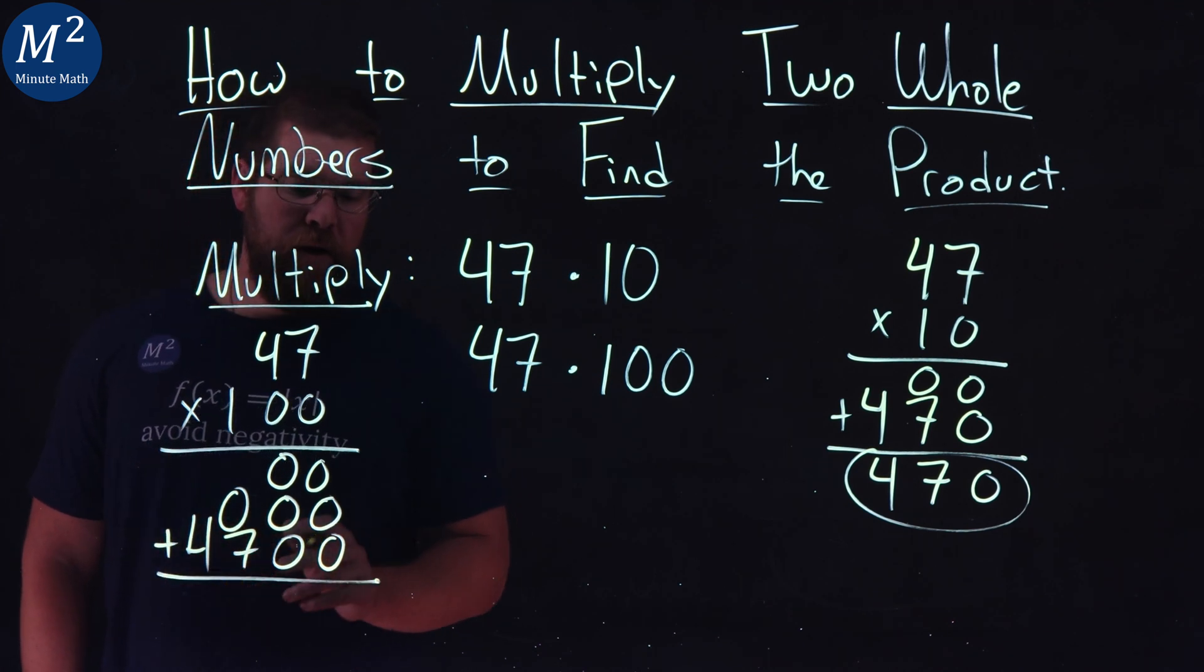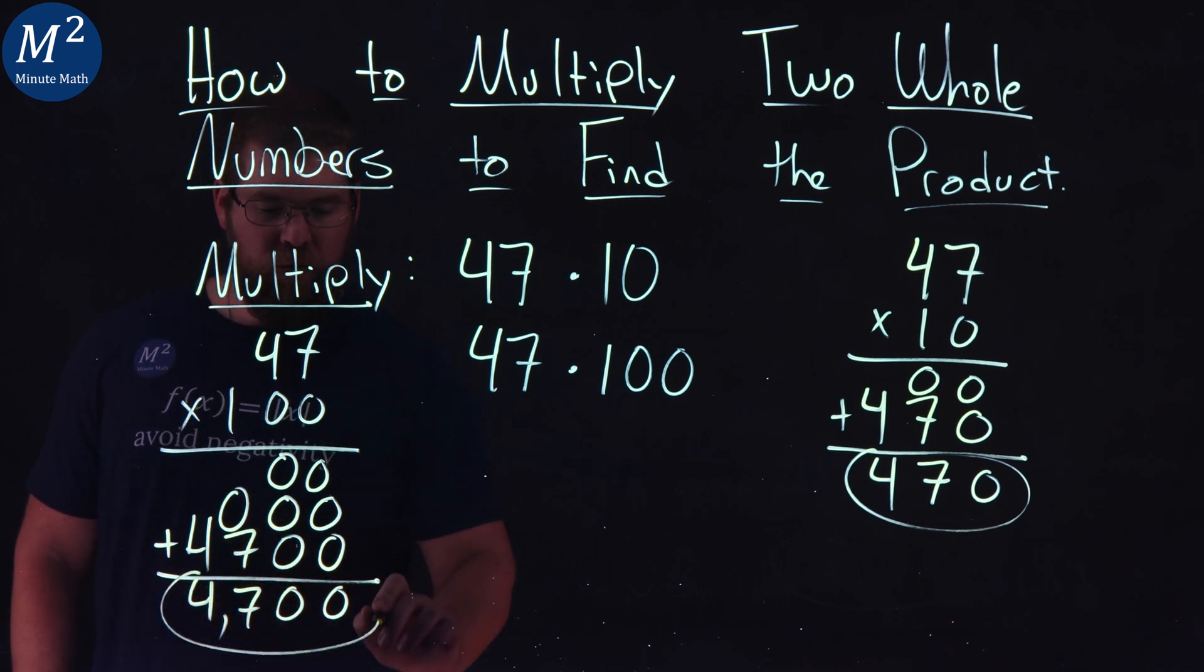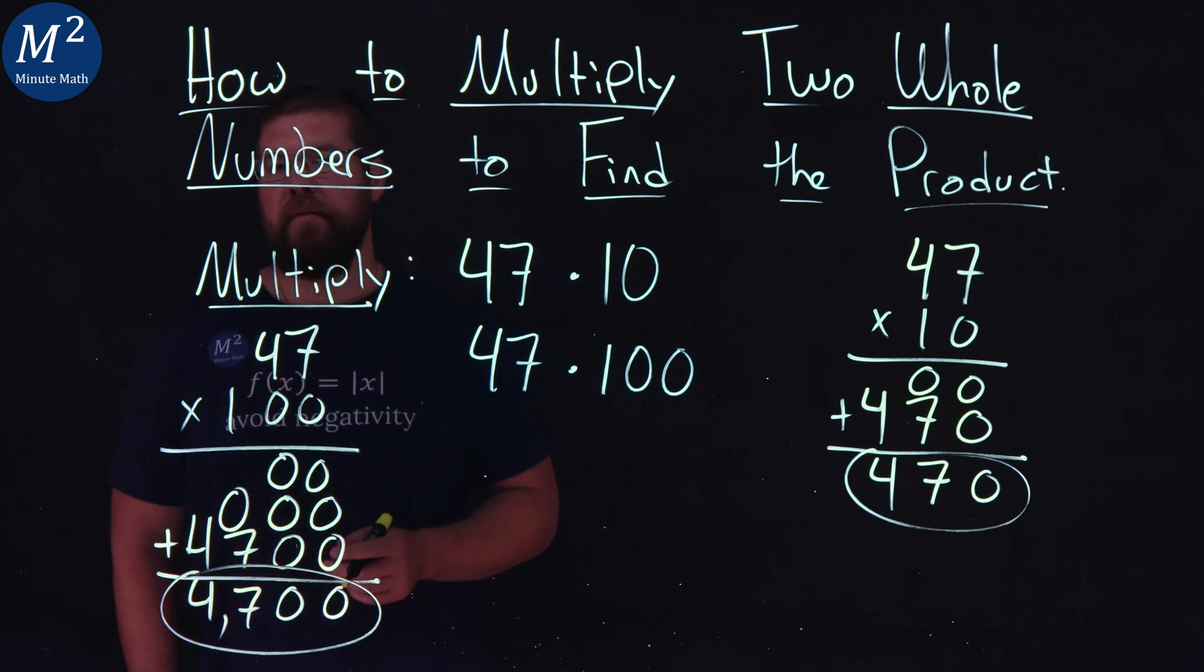Now we add them up. Zero plus zero plus zero is zero. Zero plus zero plus zero is zero. Zero plus seven is seven, and four by itself is a four. And so, 47 times 100 is 4,700.